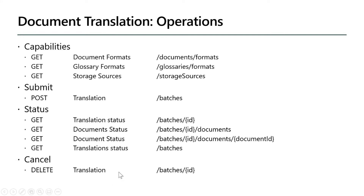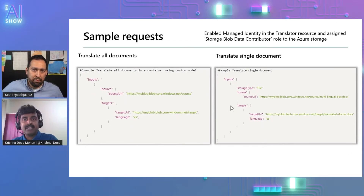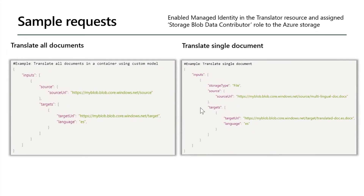What do the requests look like? It's a simple request. If you want to translate all documents, you just need three values passed to the request: the source URL, target URL, and the target language. And that's it. If you want to translate a specific file, all you provide is a storage type of file, and then we recognize it's a file and translate it. And it doesn't stop there — there are many more optional parameters, like translating using a custom translation model where you pass the custom translation ID. If you want to translate using glossaries, you can pass the glossaries. And if you want to translate a particular folder within a container, you can apply filters to go more deep into it.